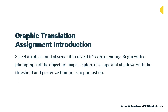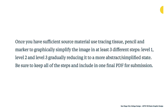Let's talk about the specific assignment. The first step is to select an object and abstract it to reveal its core meaning. Begin with a photograph and explore its shape and shadows with the threshold and posterize functions in Photoshop. Pick your photo carefully — get the right angle and set yourself up to be successful. After that, take the photo into Photoshop and play with the posterize and threshold options to see light and dark and set up your drawing. Once you have sufficient source material, use tracing tissue, pencil, and marker to graphically simplify the image in at least three different steps — level one, two, and three — gradually reducing to a more abstract and simplified state.